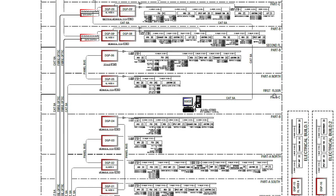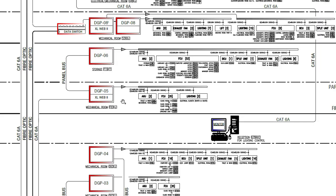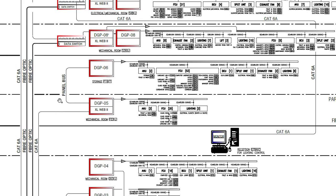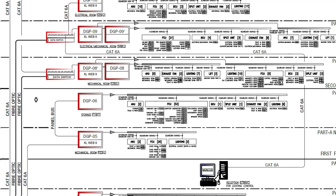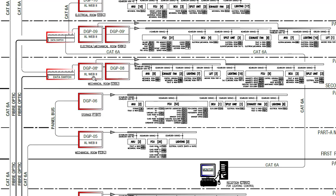Then comes the first floor, where we have DGP5. This is a master panel with a DDC controller, and DGP6 is its slave panel connected via panel bus communication. One CAT6 cable goes from DGP5 to the data switch located in the basement. DGP8 also contains an Excel Web controller, and DGP8's slave panel is connected via panel bus as well.